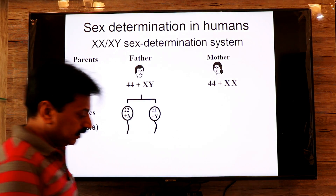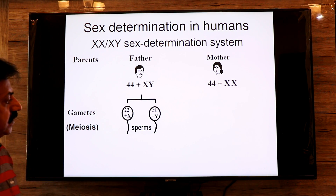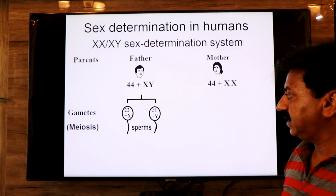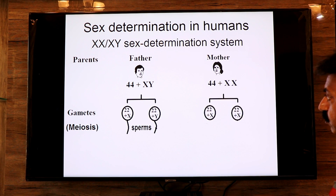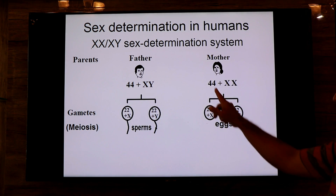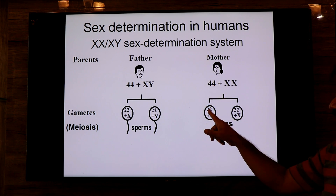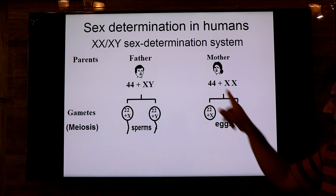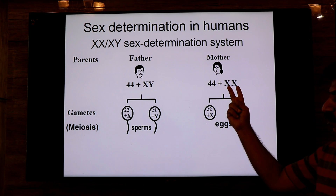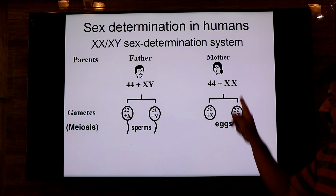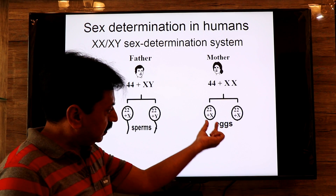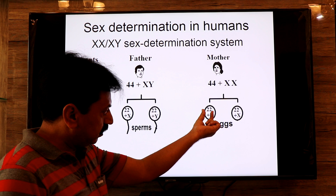In the female, oogenesis again involves meiosis to produce ova. She has 44 autosomes — 22 autosomes go to each egg. Her pair of sex chromosomes are both X, so one X goes to one egg and the second X goes to another egg. Both eggs are haploid: one has one X chromosome and 22 autosomes, and the other also has one X chromosome and 22 autosomes.